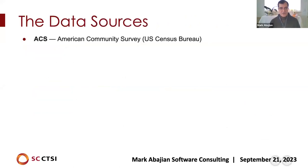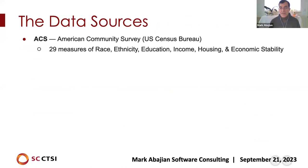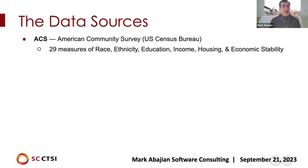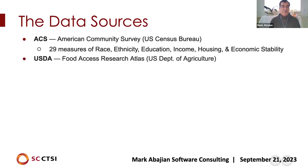So CEDO data sources — we've identified seven or eight of them. The first is the American Community Survey, prepared by the Census Bureau, giving us 29 measures of race, ethnicity, education, income, housing, and economic stability. This is on a per-census-tract basis, so these are not measures identified for individual patients — it's information associated with the patient's address and the kind of exposures a patient has.